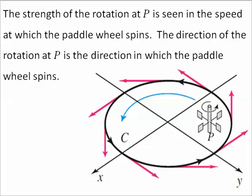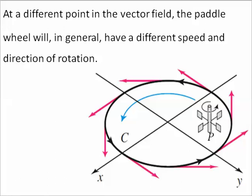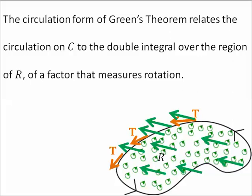At a different point in the vector field, the paddle wheel will, in general, have a different speed and direction of rotation. The circulation form of Green's theorem relates the circulation on the curve to the double integral over the region of a factor that measures rotation.